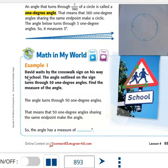Example one: David waits by the crosswalk sign on his way to school. The angle outlined on the sign turns through 50 one-degree angles. Find the measure of the angle. We're looking at these green lines here. If I were to count one-degree angles all the way up, I would get 50 one-degree angles between this ray here, because it has an endpoint, up to this one here.